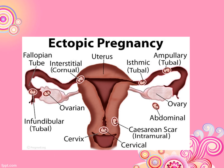This diagram shows ectopic sites both outside and within the uterine cavity. Sites outside include cervical region, cesarean scar, abdomen, ovary, pubic region, and isthmus. The uterine cavity is also shown in relation to all these potential implantation sites.